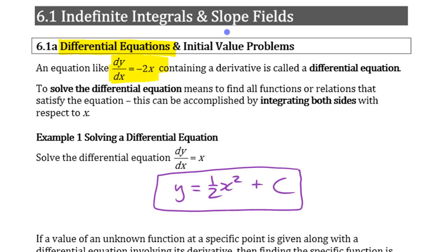So the solution, as it says up here, to solve a differential equation means to find all functions or relations that satisfy that equation. Find all functions where the derivative is equal to the x value. That's what that's saying. If you take any parabola that looks like that, half x squared, the derivative is equal to whatever the x coordinate is. The slope of the curve is whatever the x value is.